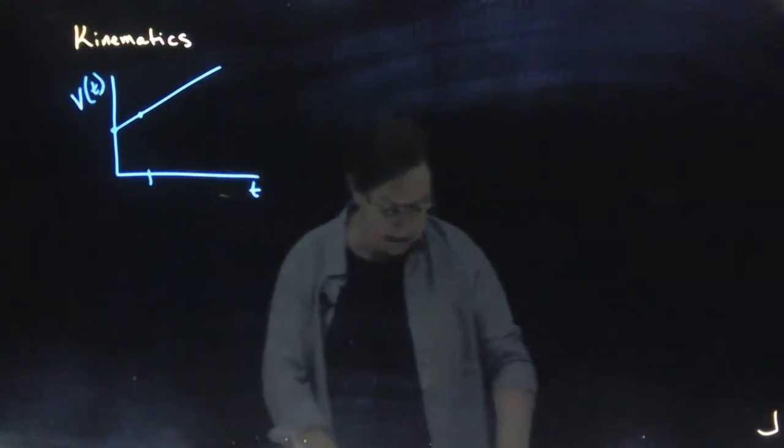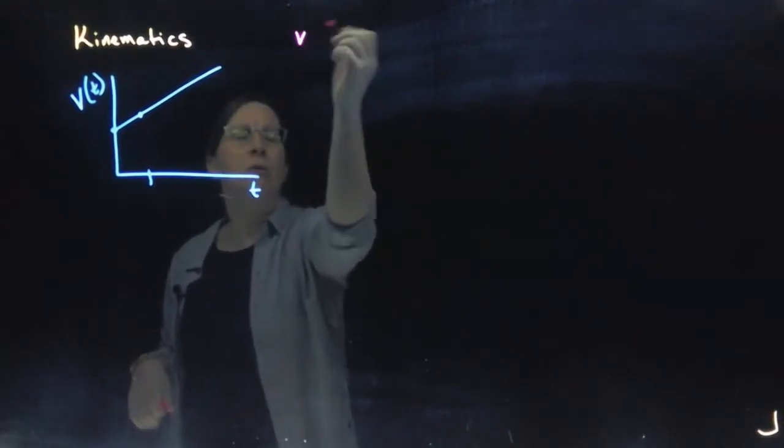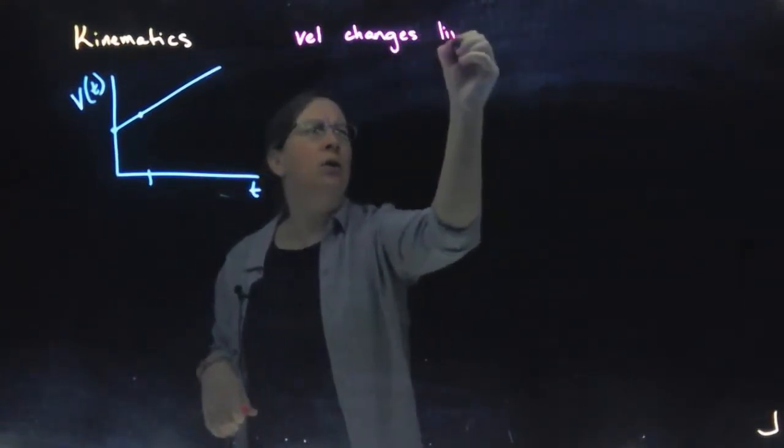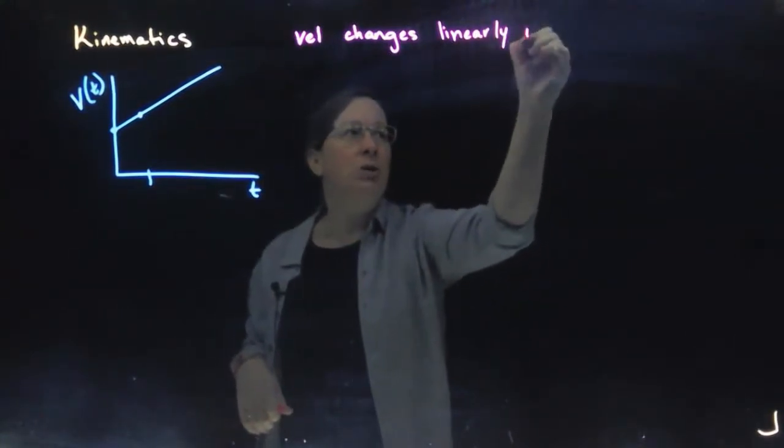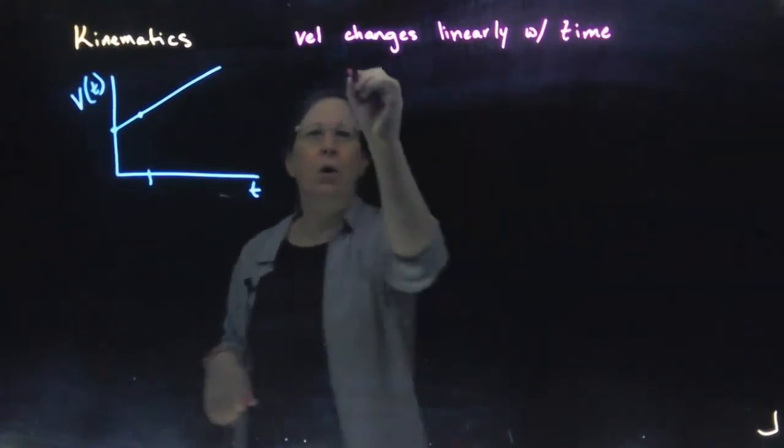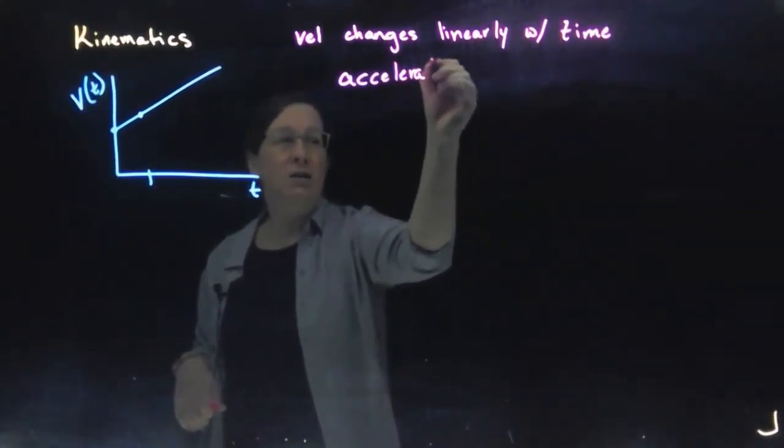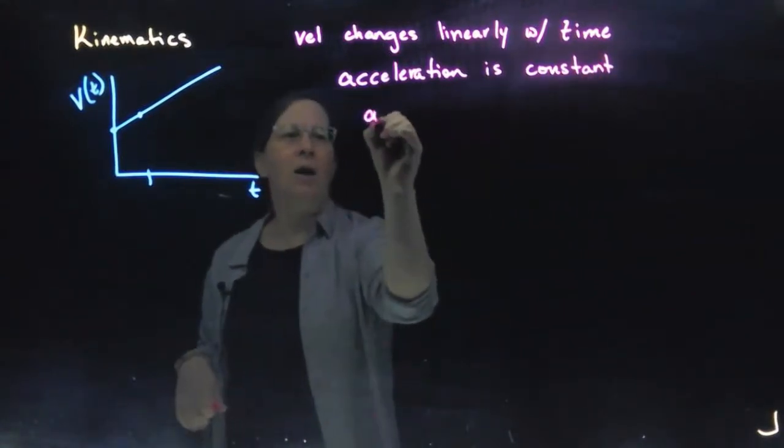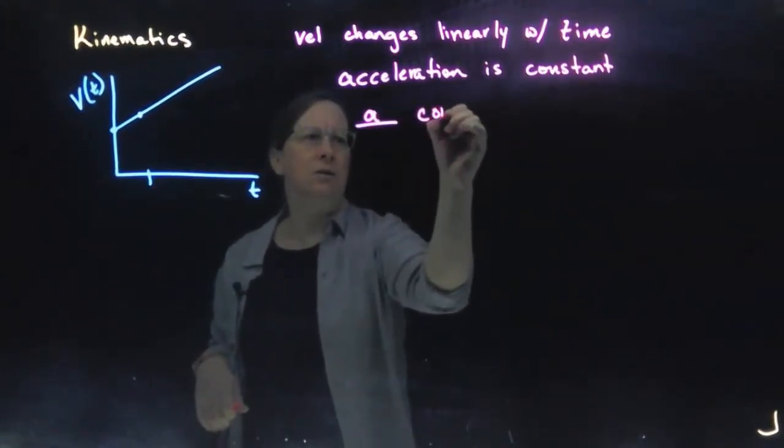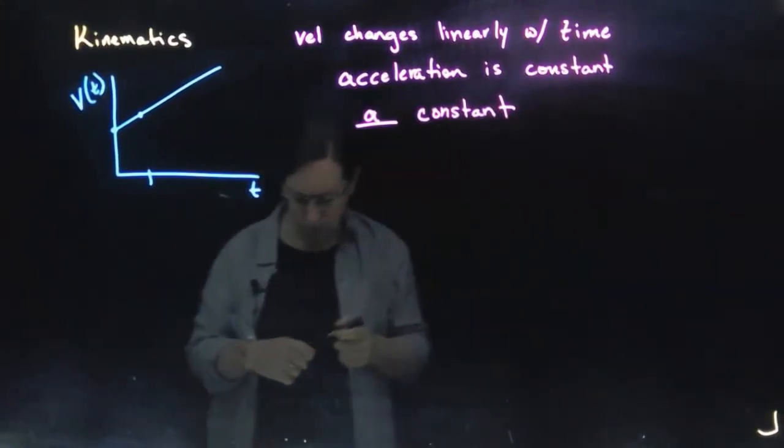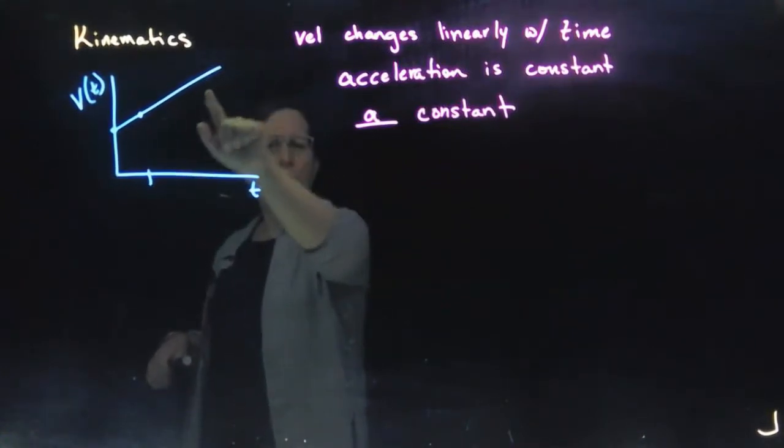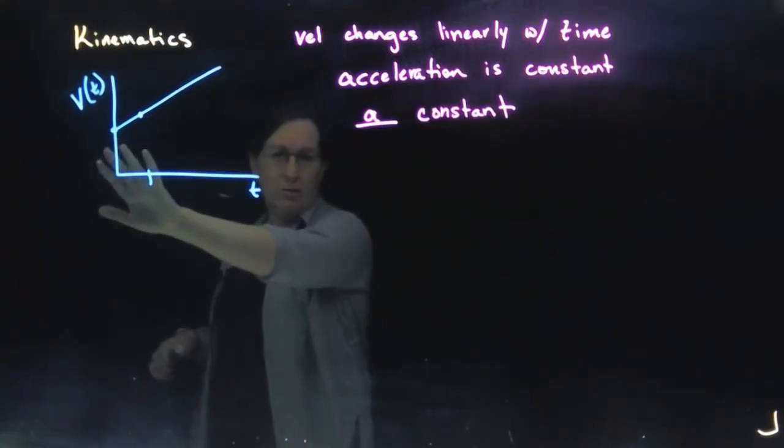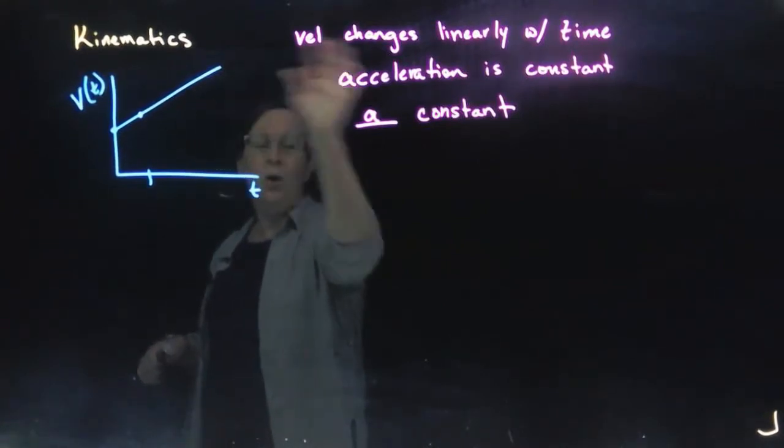So we're looking at a case where our velocity changes linearly with time. And so this is a very special case, or our acceleration is constant. So we have a constant. It has a constant value. And that's because the slope of this curve anywhere along in here is going to be the same. It's the same at time equals zero. Notice this is not at rest at time equals zero. At time equals one, at time equals two, and so forth.